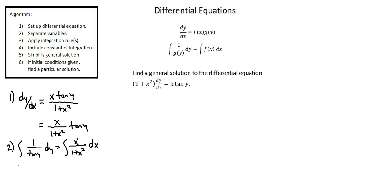Before integration, one final algebraic manipulation: on the left side, 1 over tangent y is cotangent y, so we take the integral of cotangent y with respect to y. On the right side, we observe a fraction with the derivative of a function in the numerator and the original function in the denominator, with one adjustment. The exact derivative of the denominator would be 2x, so to get 2x in the numerator we multiply outside the integral by 1 half, giving 1 half times the integral of 2x over 1 plus x squared with respect to x.